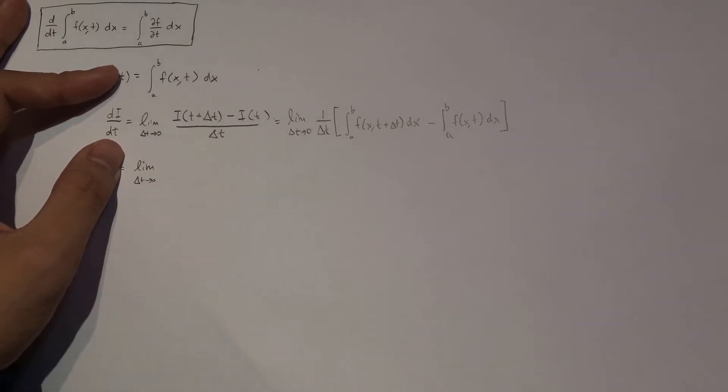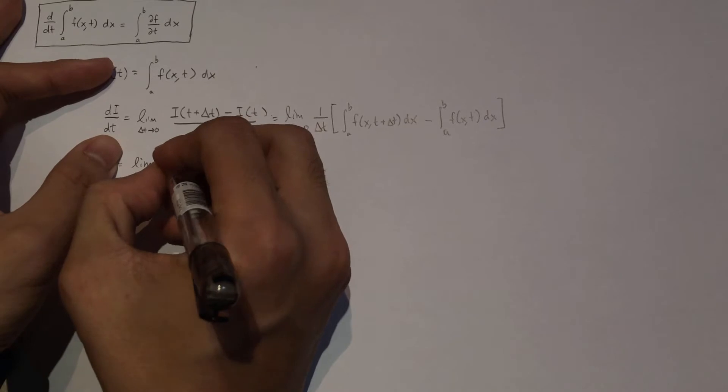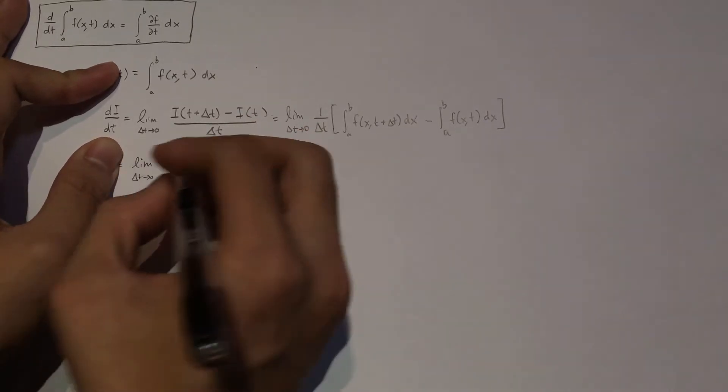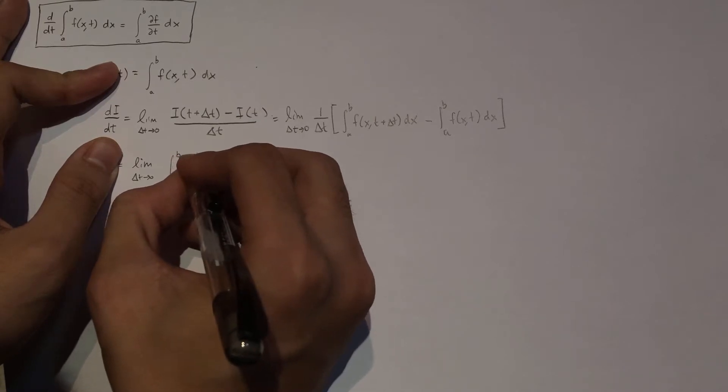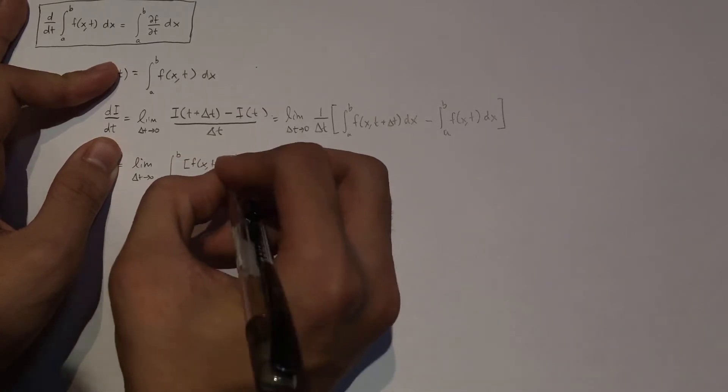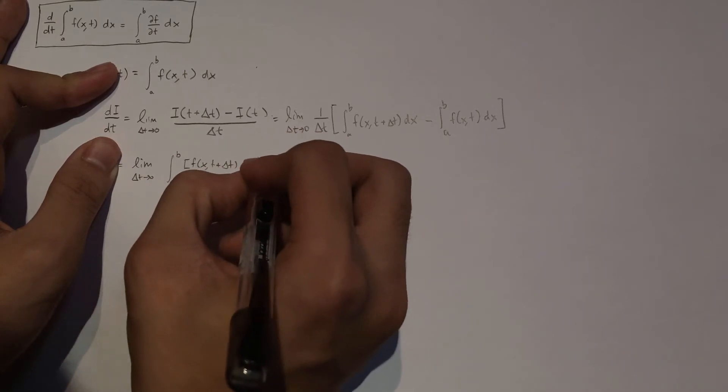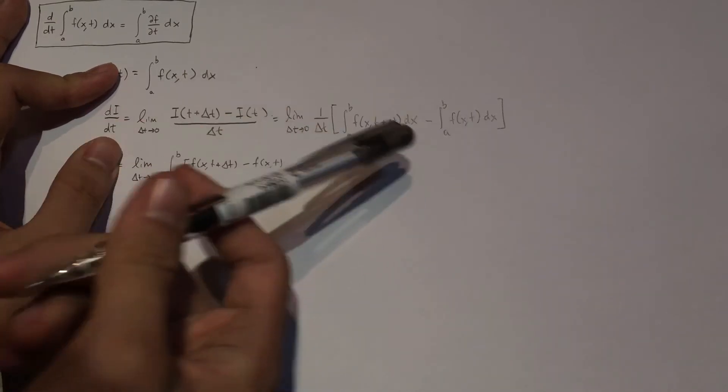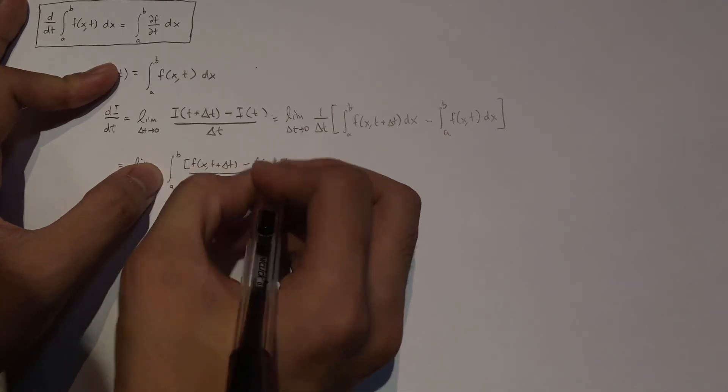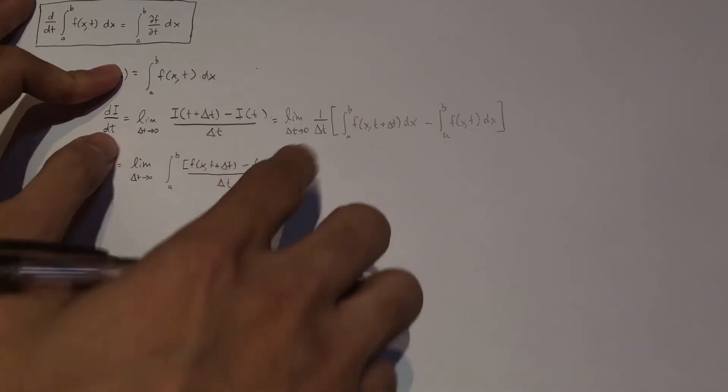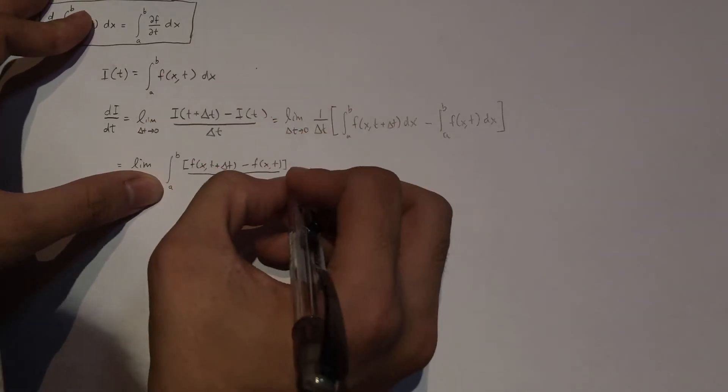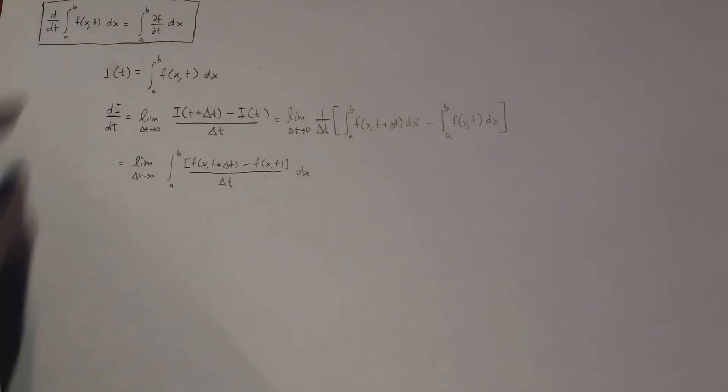I could just say limit as T approaches zero. I'm not going to write this one over T because I'm going to put it inside the integral now because delta T is just ultimately constant. And so the integral between from A to B of F of X, T plus delta T minus F of X of T, which is just this bit here, all divided by delta T, which is just this bit outside, which I've taken into the integral here, DX.